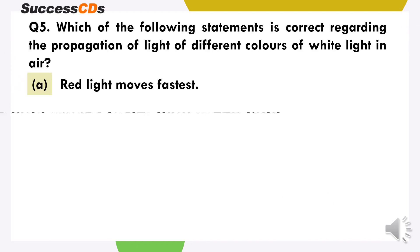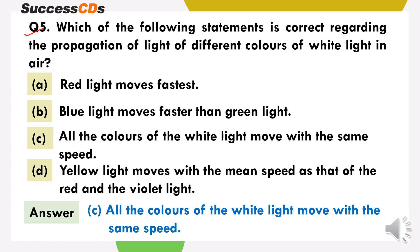The next question is: which of the following statements is correct regarding the propagation of light of different colours of white light in air? The correct answer is that all the colours of white light move with the same speed. White light jo hoti hai wo various components se bani hoti hai, aur is mein sare hi colours ek hi speed se move karte hai.